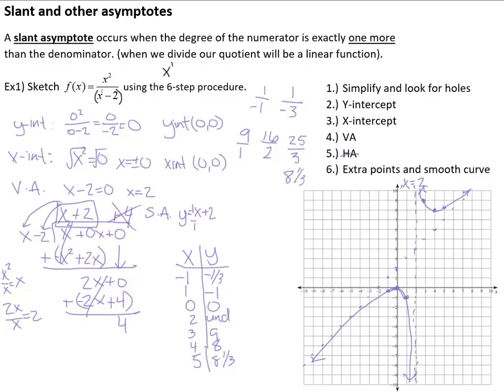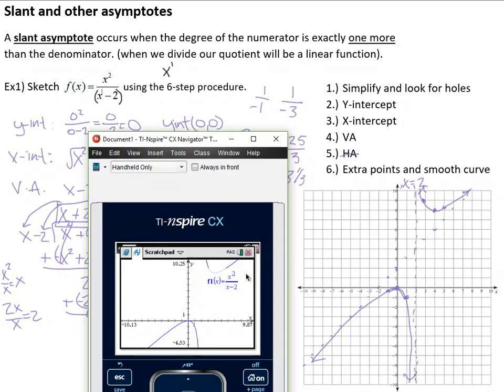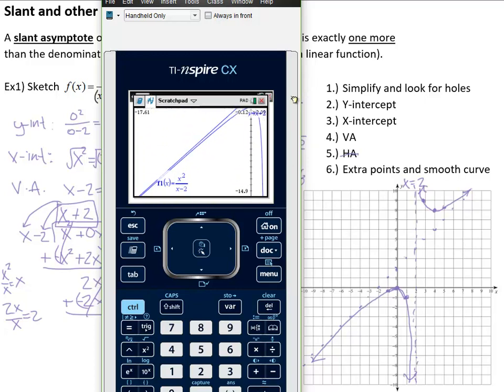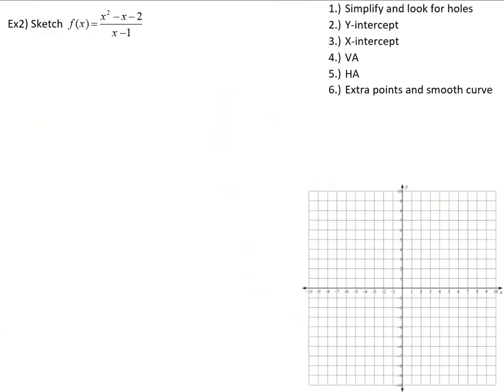Let's take a look at that actual graph. You can see we did a pretty good job. And if I graph in the line Y equals X plus 2, there you go. You can see it's bounded by that line. It's getting closer and closer to that line as it goes out. And we found that slant asymptote. Pretty cool.